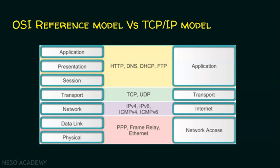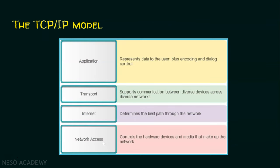The TCP/IP model has four layers. The network access layer controls the hardware devices and media that make up the network. The internet layer determines the best path through the network. The transport layer supports communication between diverse devices across diverse networks — it deals with process-to-process communication. The application layer deals with users: representing data, encoding, and dialog control. It combines the functionalities of OSI's application, presentation, and session layers.